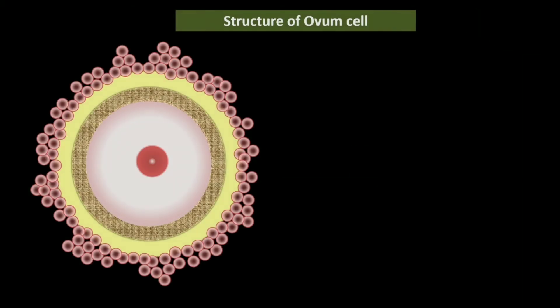The ovum, or female gamete, is the mature female gamete which develops from the primitive germ cells of the ovaries. Each of the primitive germ cells gives rise to a mature ovum after successive divisions. Let's learn more about the structure of the ovum.